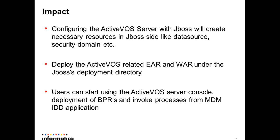The impact is that once we configure all these steps, it will create resources in JBoss like a data source and security domain, and it will deploy the ActiveVOS server EAR and the ActiveVOS Central WAR to the JBoss deployment directory. Once all steps are done, we can deploy BPR files from the ActiveVOS designer to the ActiveVOS server and invoke processes from the MDM application.